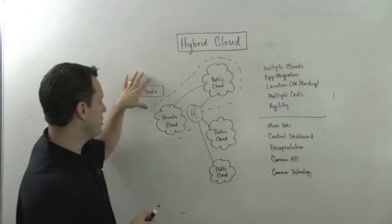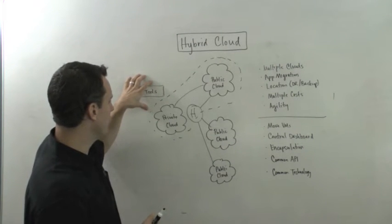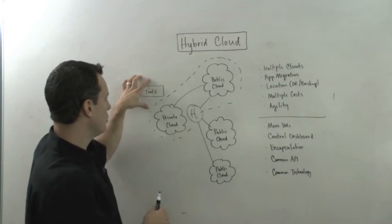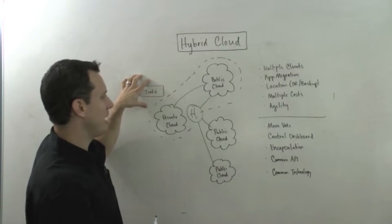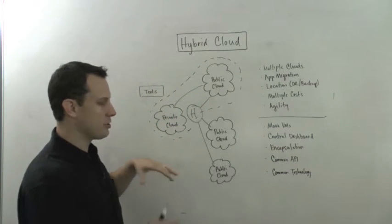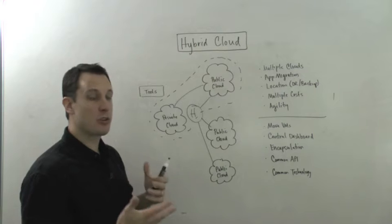The other thing we're starting to see is we're seeing an evolution of tools. Tools that are going to give us visibility across multiple cloud environments. Tools that talk the language of the API of an OpenStack cloud, or an AWS cloud, or a VMware cloud, or some other set of APIs. And those are all good things.